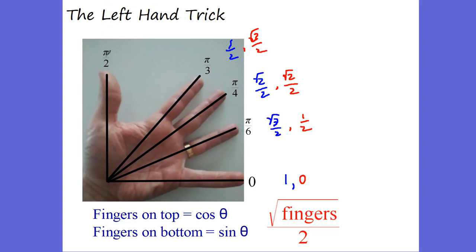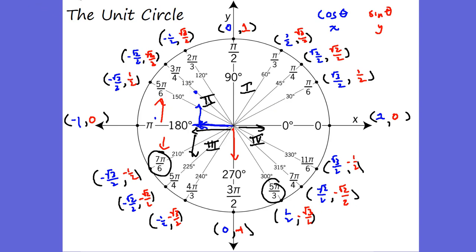At pi over two, no fingers on top — so cosine of pi over two is zero. Four fingers on the bottom — square root of four over two equals one — so sine of pi over two is one. God's given you this left-hand trick to find the first quadrant. All values are positive in quadrant one. Only the sine is positive in quadrant two. Only the tangent is positive in quadrant three — because sine and cosine are both negative, negative divided by negative is positive. Only the cosine is positive in quadrant four. The acronym is 'All Students Take Calculus.'